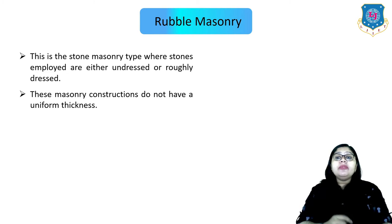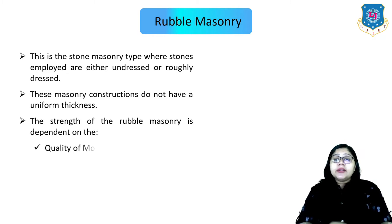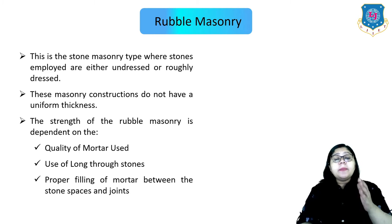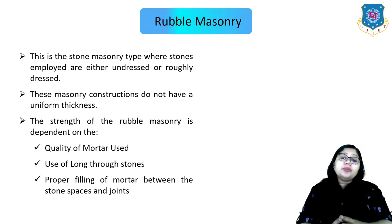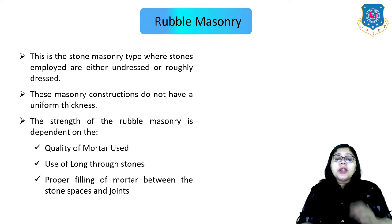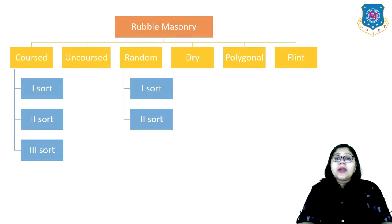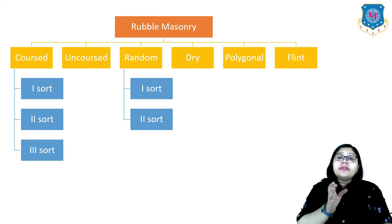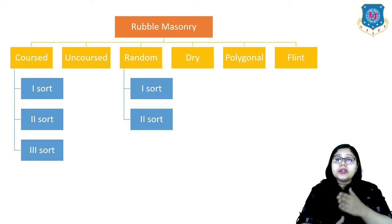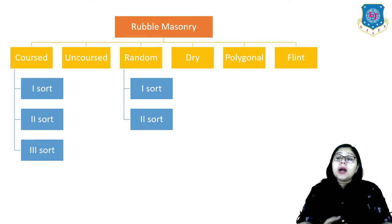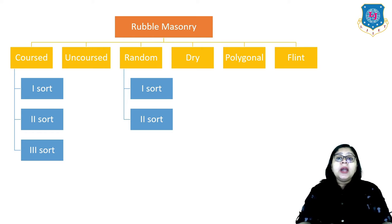Rubble masonry construction does not have uniform thickness. The strength of rubble masonry depends on different factors like the quality of mortar used, the use of long through stones, and proper filling of mortar between the stone spaces and joints. Rubble masonry can be classified as coarse, uncoursed, random, dry, polygonal and flint. The coarse type is further classified as types 1, 2 and 3, and similarly the random type has types 1 and 2.